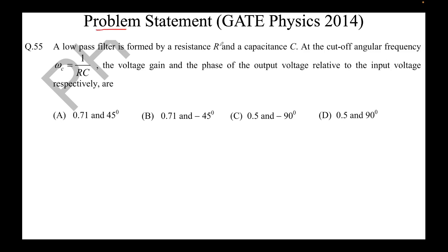The problem statement from Gate Physics 2014 reads as follows: a low pass filter is formed by resistance R and capacitance C. The cutoff angular frequency omega_c equals 1 by RC. We are given four options, each containing a value of voltage gain and the phase with respect to the input voltage, and we need to find the correct option.